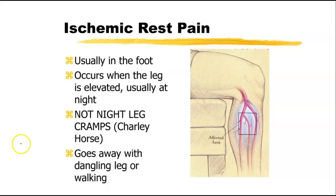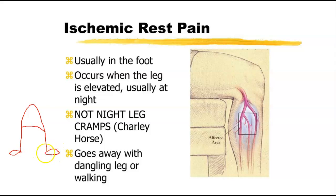This is an arterial issue. In order to help get blood flow, think of the word 'arterial' — to me it kind of looks like legs. So if somebody has an arterial issue, they should dangle their legs or have them in a dependent position to help with blood flow using gravity. That's why rest pain goes away when the legs are dangled or when walking.